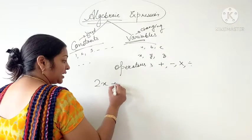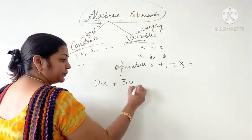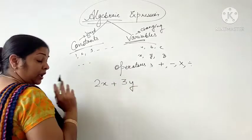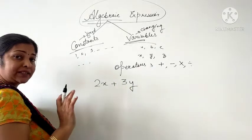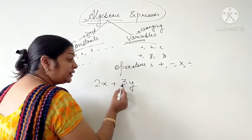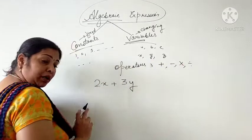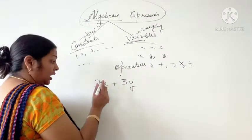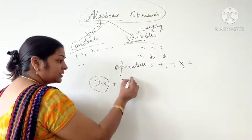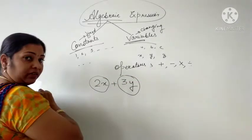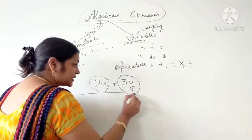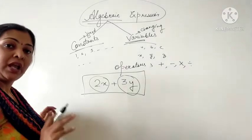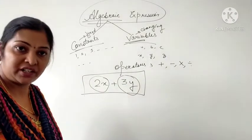Suppose 2X plus 3Y. Here 2 and X are joined by the sign of multiplication, but there is no need to represent multiplication. It is obvious. Here 3 and Y are again joined by multiplication, and in between there is an operator which is addition. That means we are adding 2X and 3Y. This complete expression is known as Algebraic Expression.